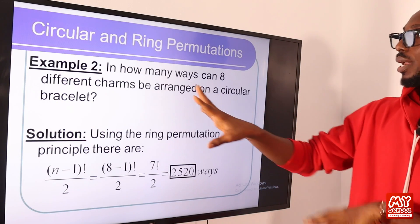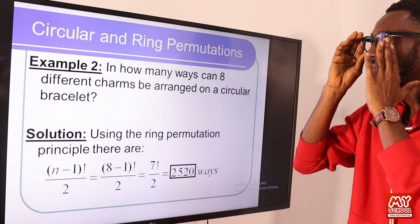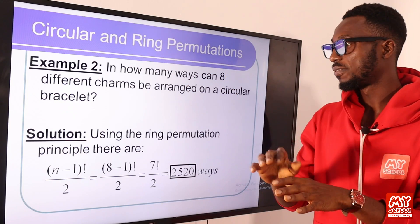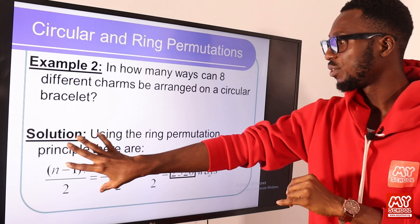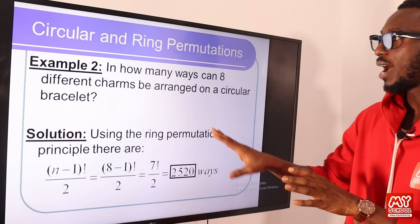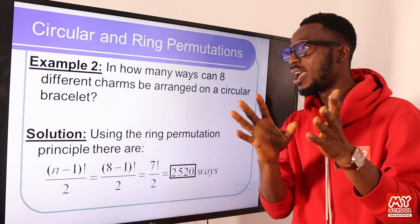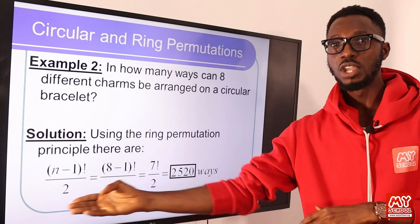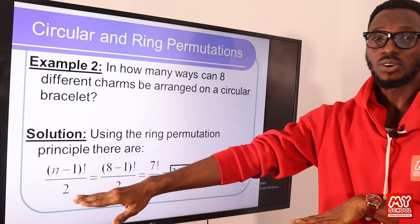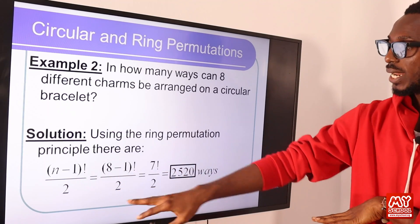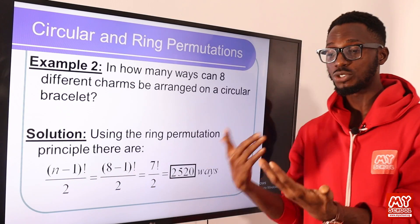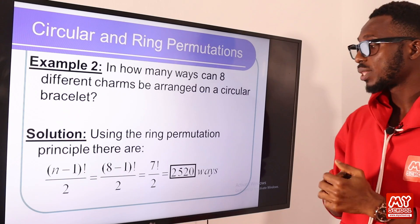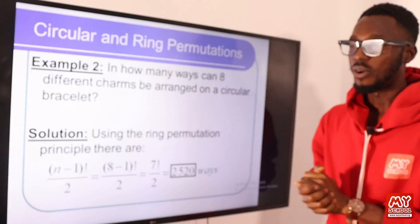Example: in how many ways can eight different charms be arranged on a circular bracelet? Using the ring permutation principle, since it can be in clockwise or anti-clockwise, we have (8−1)! divided by 2, which is 7! over 2. Seven factorial is 7×6×5×4×3×2×1 = 5040, divided by 2 gives 2,520 ways.